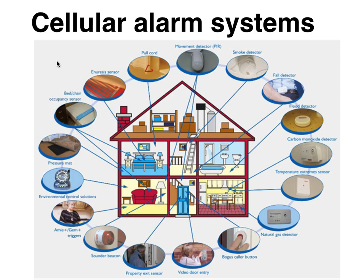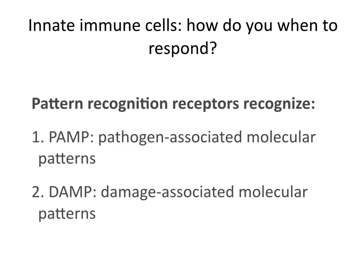These receptors don't only induce phagocytosis; they also activate the cells and make them produce cytokines that can tell other cells to do something. So how do innate immune cells know how to respond? It's because of pattern recognition receptors that recognize either pathogen-associated molecular patterns, PAMPs, or damage-associated molecular patterns, DAMPs.